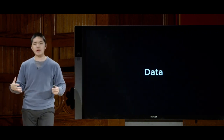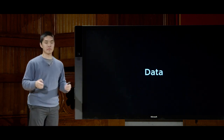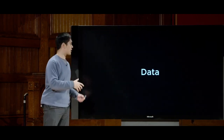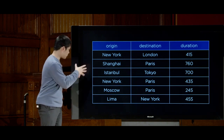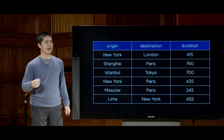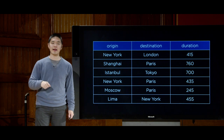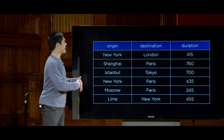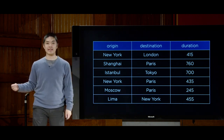Before getting into Django specifics, let's begin with a discussion of SQL more generally, and the types of data we'll want to store. There are many ways to store data inside a computer system, but in a relational database, we store data inside a table where each table has rows and columns. For today, we'll imagine constructing a database for an airline — keeping track of various flights and which passengers are on those flights.